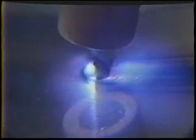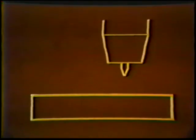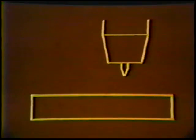The bright period is when the high current is on. The dimmer period is when the low current is on. If we could see a cross section of the weld as it is being deposited, it would appear as in this slow motion animation.